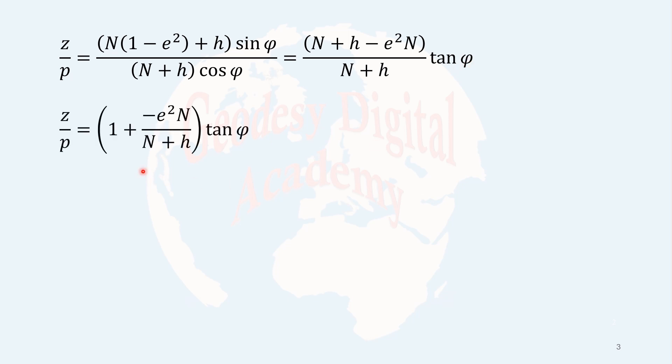And sine of phi over cosine of phi will be tangent of phi. Therefore, I can simply write this formula. As I said, n plus h over n plus h, 1. So, and this term over n plus h is the same here. Well, we want to determine phi. Then, I solve this equation for phi. I multiply both sides by the inverse of this term. And after that, I will take arctangent or tangent inverse of both sides. Then, I come to this formula.